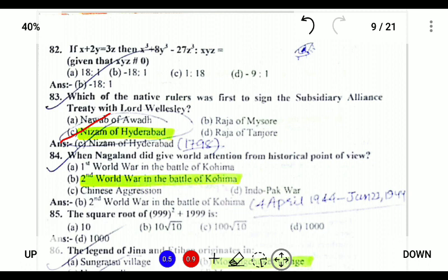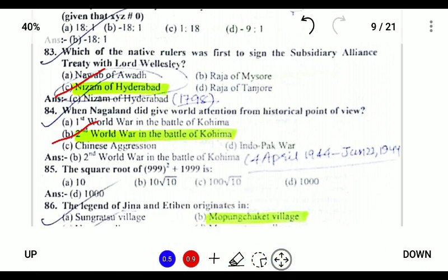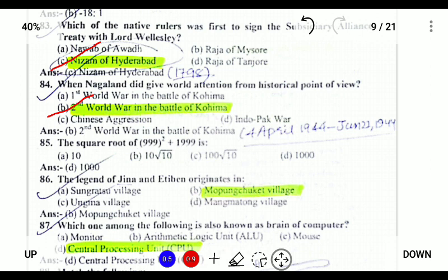When did Nagaland get world attention from a historical point of view? During the Second World War — most importantly, the Battle of Kohima from 4th April 1944 to 22nd June 1944. The Second World War battle of Kohima was fought between the Japanese and the British.